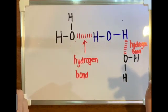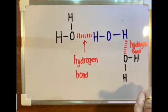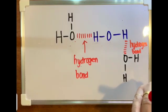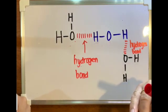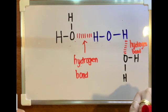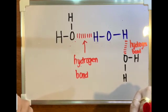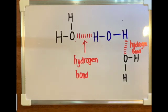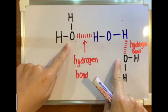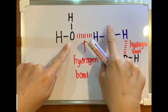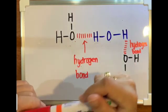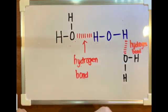To summarize: number one, in order to form hydrogen bond, the molecule must contain hydrogen atoms. Number two, the hydrogen atoms in the molecule must be bonded to a highly electronegative atom — nitrogen, oxygen, or fluorine. So as long as we can see oxygen bonded to a hydrogen atom, this is one of the characteristics that helps us identify where the hydrogen bond is located.